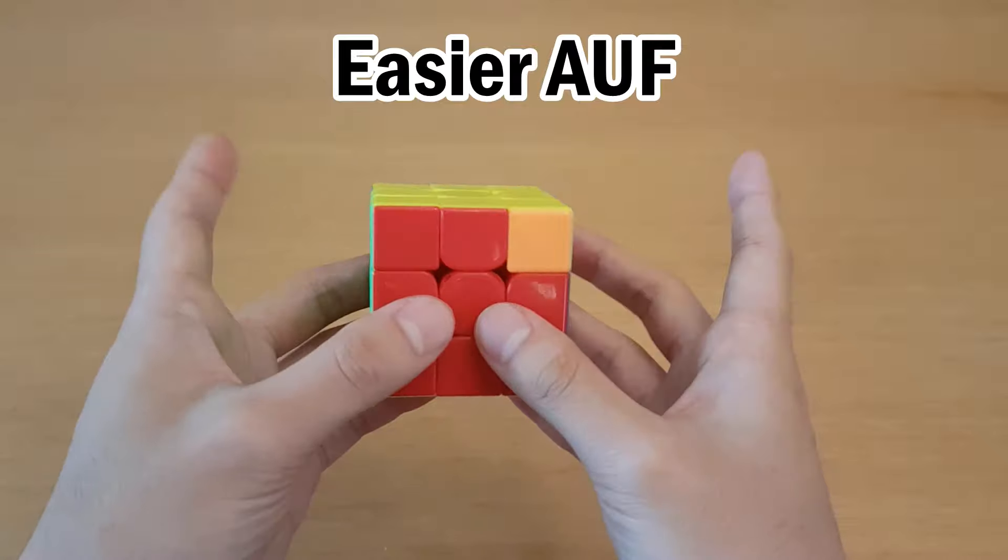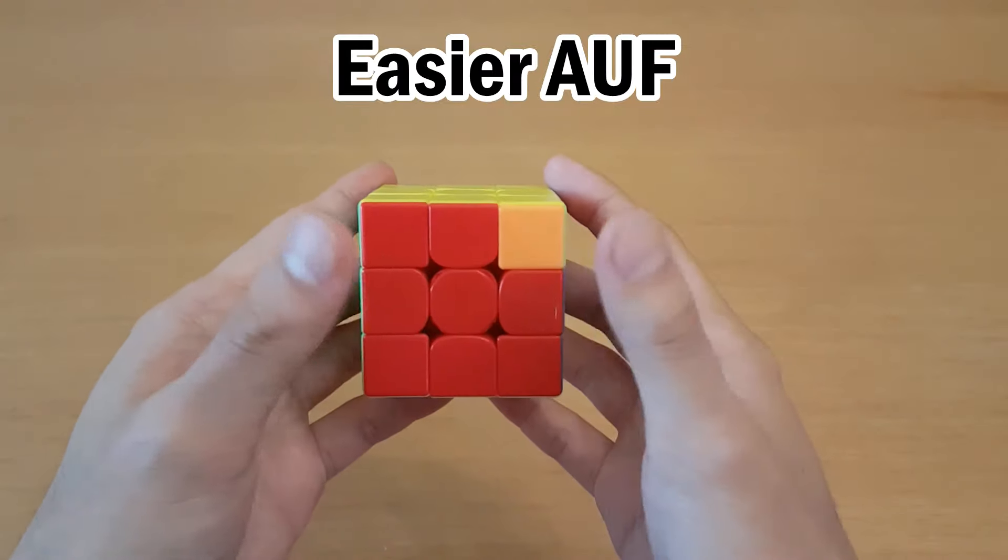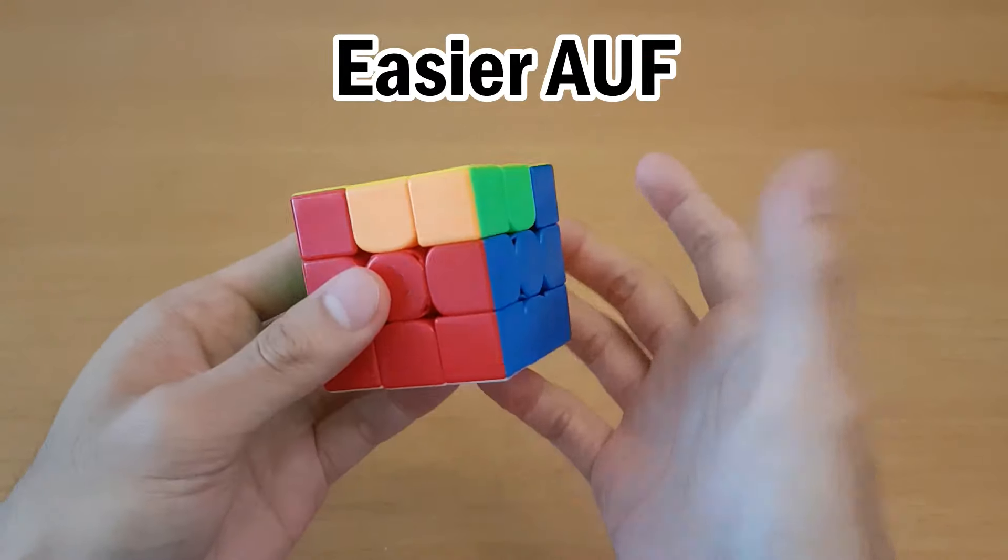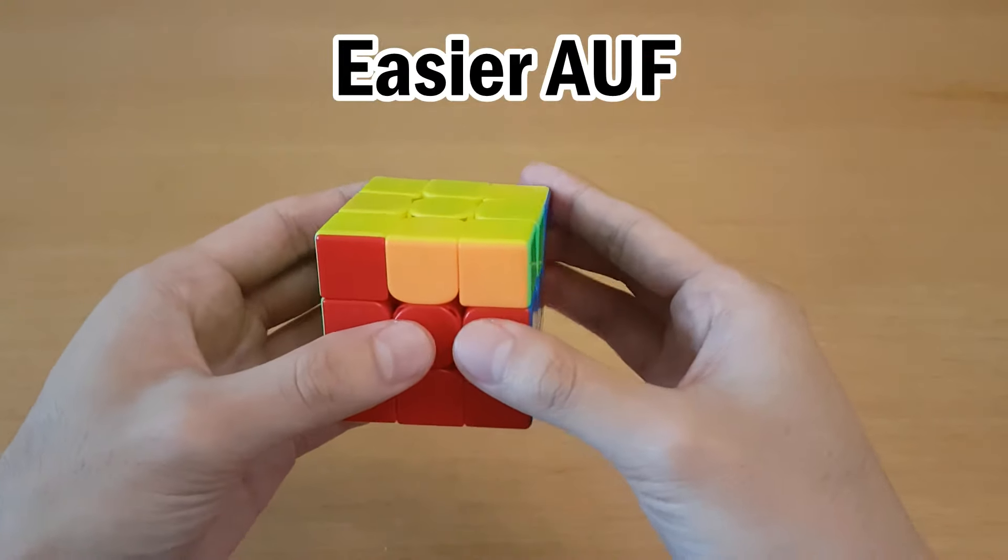But for the one I'm using now, you can use any U move in the beginning, and it will be fine because both thumbs are on front. For example, U. And beginning with U2 really works with either hand you do U2 with.